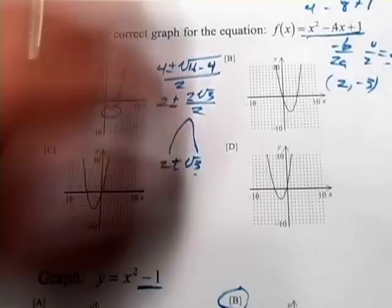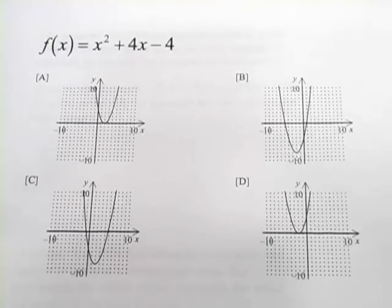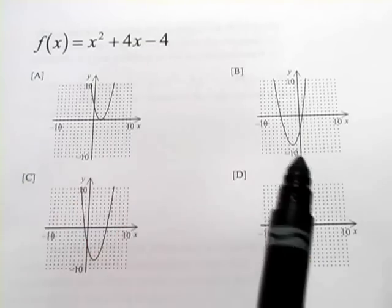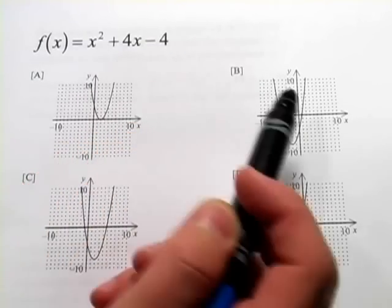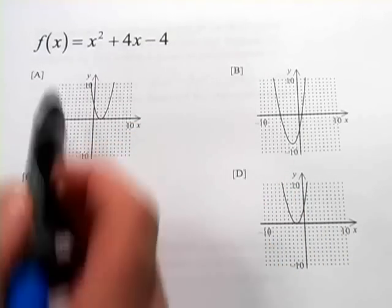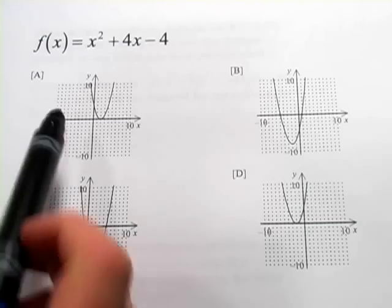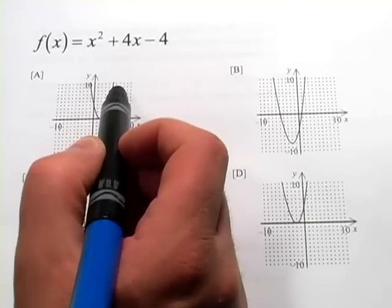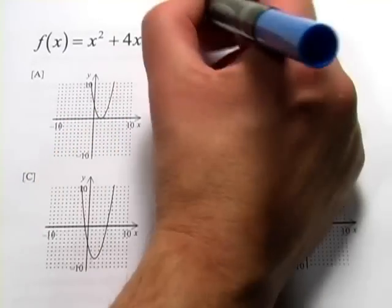Let's look at one more. All right. Here we have X squared plus 4X minus 4. And this is going to be an upward opening parabola, of course, and all of these are. What I would suggest here is that we go ahead and try to find the vertex.